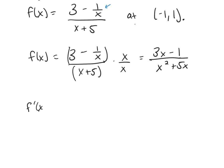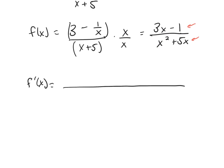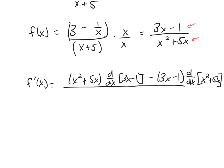So the derivative now, we're going to use the quotient rule. Here's our top function, here's our bottom function. So remember, it's the bottom times the derivative of the top minus the top times the derivative of the bottom all over the bottom squared.